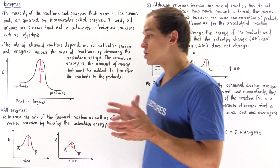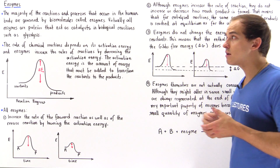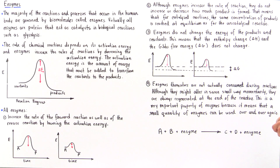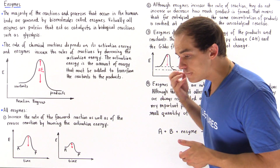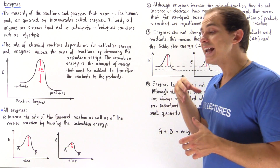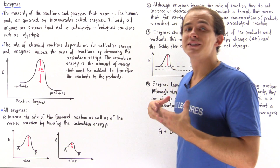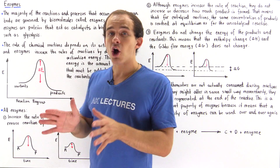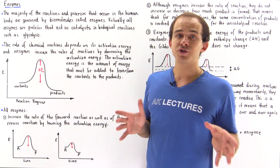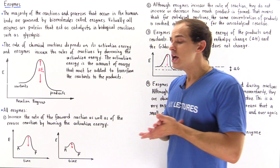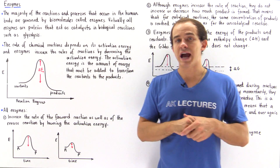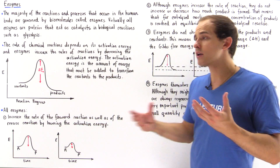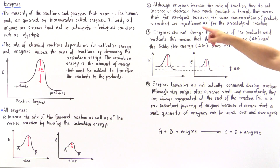Although enzymes increase the rate of the reaction and do affect the kinetics, they do not affect the thermodynamics of that reaction. The concentration of products produced at the end of the catalyzed reaction is exactly the same as for the uncatalyzed reaction. At equilibrium, for the catalyzed version, we still have the same exact concentrations of reactants and products.